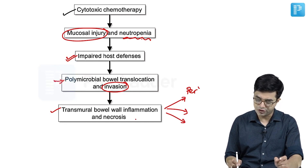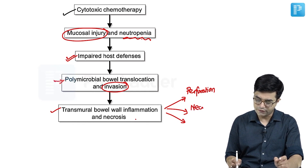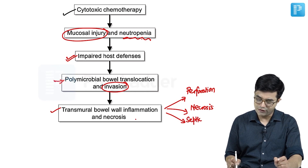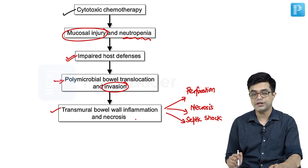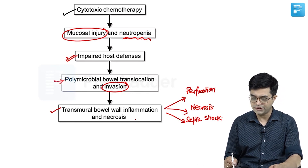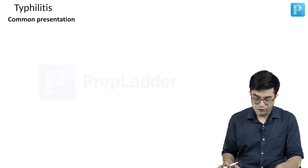There is either perforation of the bowel, or there is necrosis of the bowel, or there is release of inflammatory mediators and starting of the cascade of septic shock in the patient. These are the three major causes of death in Tiflitis.